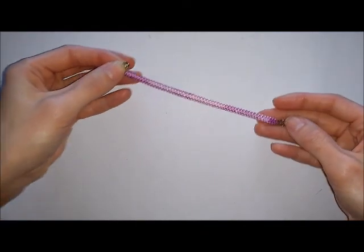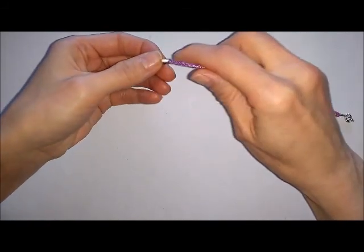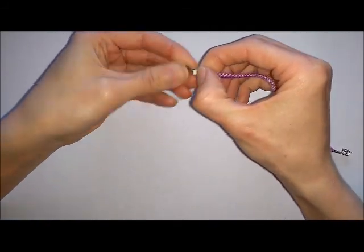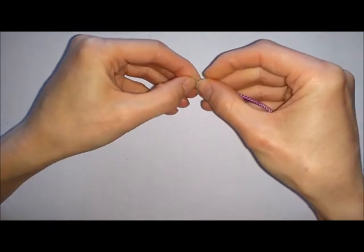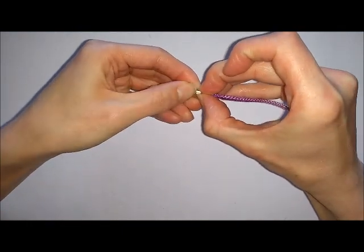Take the bracelet and slot the cord inside the crimp bead, and just gently pinch the sides together.